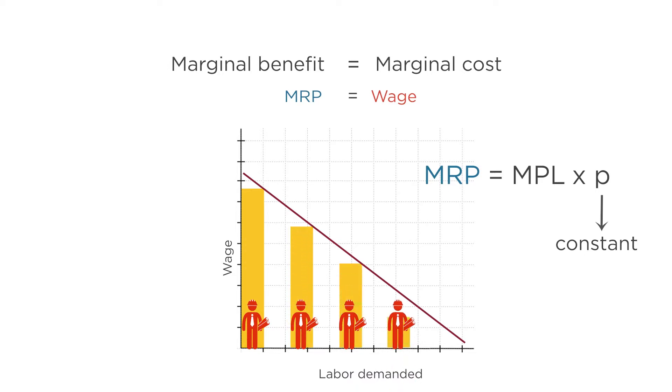And with a constant price, this means the marginal revenue product falls too. Remember, the firm wants to set the marginal benefit equal to the marginal cost. Marginal benefit is marginal revenue product. So if MRP is falling as the quantity of labor goes up, so must the marginal cost of labor or the wage. The labor demand curve is downward sloping.